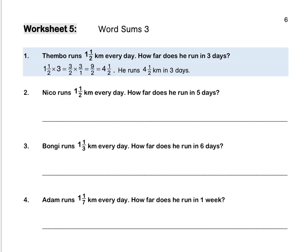Worksheet 5. Tempo runs 1.5 km every day. How far does he run in 3 days? 1 and a half times 3: we rewrite 1 and a half as 3 over 2, and 3 as 3 over 1. We cannot simplify in our question because both 3s are at the top. We multiply out: 3 times 3 is 9, 2 times 1 is 2. So, as a mixed number, it's 4 and a half. Therefore, he runs 4 and a half kilometres in 3 days.